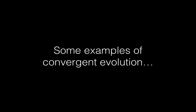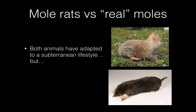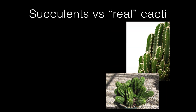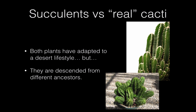Some examples of convergent evolution — nature is full of them. One of my favorites is the similarity in appearance between mole rats and true or real moles. Both animals have adapted to digging in tunnels, a subterranean lifestyle, but they are descended from completely different ancestors. The mole rat is actually a type of rodent, and the true mole is actually a type of insectivore. Their teeth are completely different if you look closely, but externally they look very similar. Another example from the plant world is the difference between succulents and true cacti. Both of these plants have adapted to a desert lifestyle, but they are descended from different ancestors. The true cactus and the succulent look very much alike, and to an untrained eye, this example of convergent evolution might lead you to think that they're closely related, but they actually aren't.